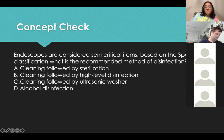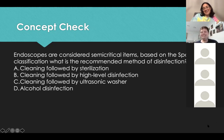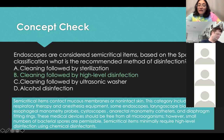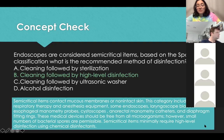Concept check: endoscopes are considered semi-critical items based on the Spaulding classification. What is the recommended method of disinfection? Cleaning followed by high-level disinfection. Semi-critical items include respiratory therapy and anesthesia equipment, some endoscopes, laryngoscope blades, esophageal manometry probes, cystoscopes, and diaphragm fitting rings. These devices should be free from all microorganisms, though small numbers of bacterial spores are permissible. Semi-critical items minimally require high-level disinfection using chemical disinfectants.